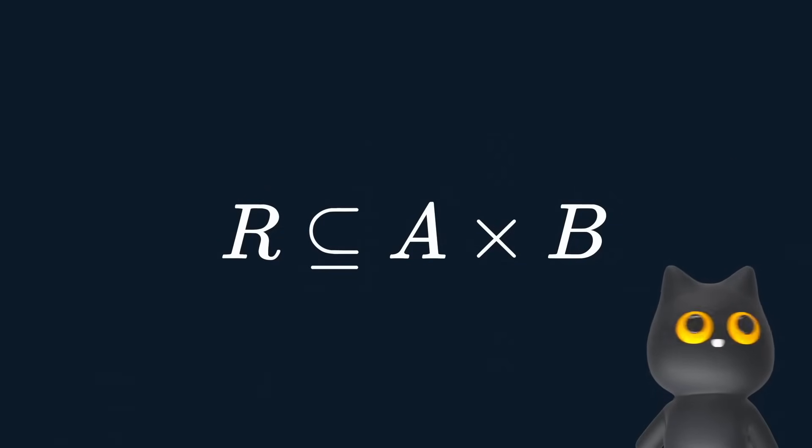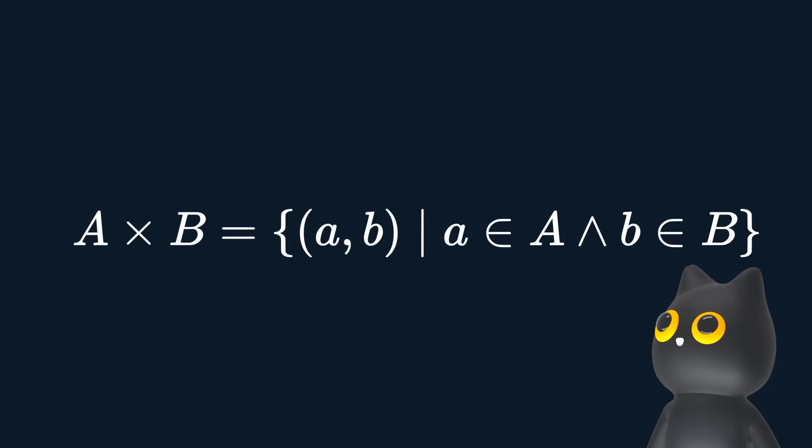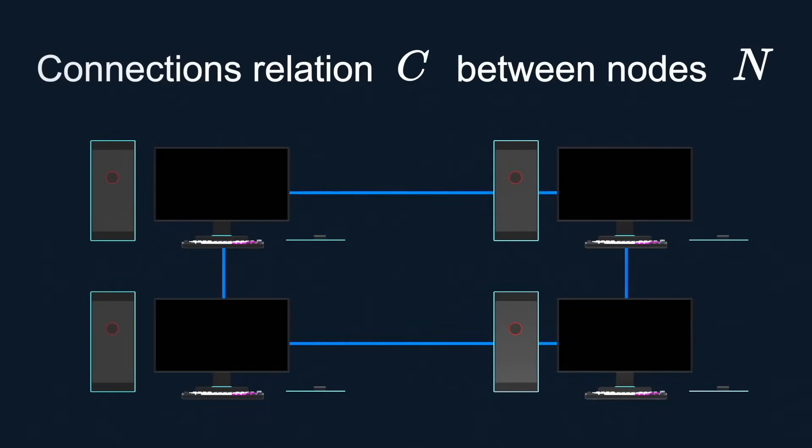This is actually a Cartesian product, which generates all possible combinations of elements in sets A and B as a pair. Some cool things you can do with relations include expressing the integer square root, or even network connections.